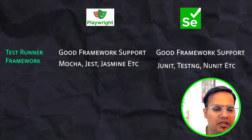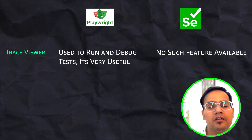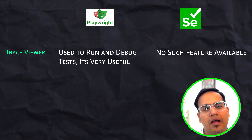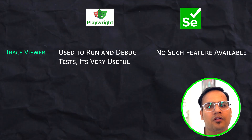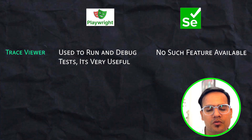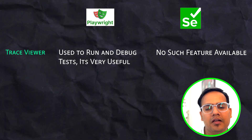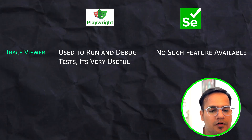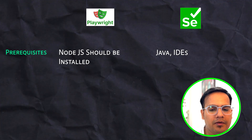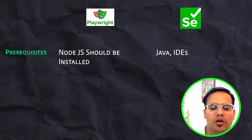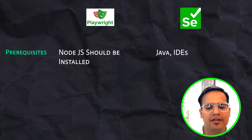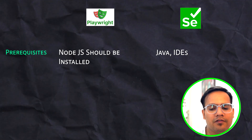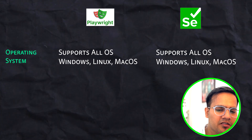Trace Viewer is another powerful tool that comes with Playwright. With Trace Viewer you can inspect the requests and responses going to and from the browser, intercept them, and perform actions on them. This functionality is available in Playwright but is very limited or unavailable in Selenium. For prerequisites, Playwright needs Node.js, while Selenium requires Java, an IDE like Eclipse, and a standalone server or other dependencies depending on the language binding.